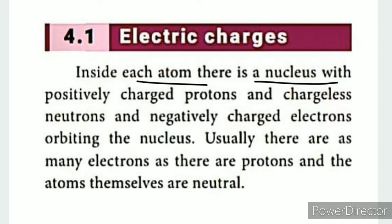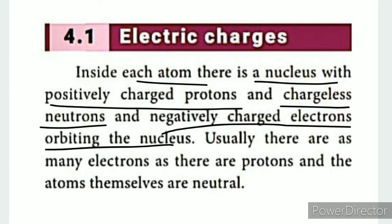An atom has a nucleus at its center. The nucleus contains positively charged protons and chargeless neutrons. Electrons, which are negatively charged, orbit around the nucleus.